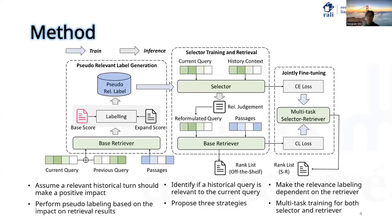Here is the overview of our method. We first conduct the relevant label generation by assuming a relevant historical term should make a positive impact. Then we perform selector training and retrieval based on three strategies. Finally, a jointly fine-tuning method for training both selector and retriever is proposed to make the relevance labeling dependent on the retriever.